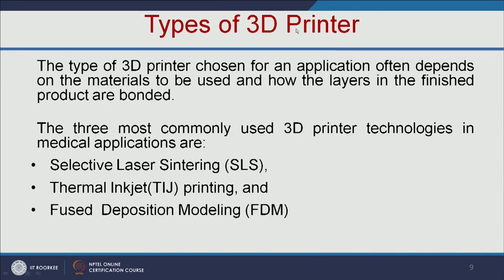Let us see the types of 3D printers. There are three types. The first one is selective laser sintering. The next one is thermal inkjet printing. The third one is fused deposition modeling. The selection of a 3D printer is based on the material which you want to use and also how the layers in the finished product are bonded.